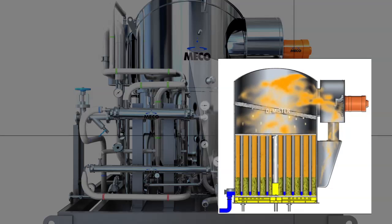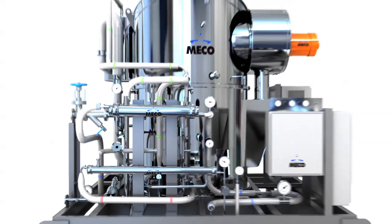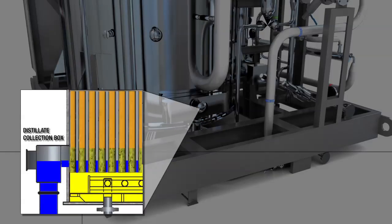Entrained water droplets which have been removed by the demister return to the process. Vapor condenses on the outside of the evaporator tubes, forming distillate.